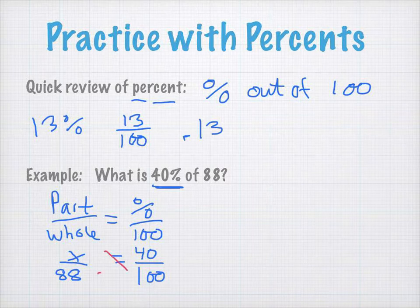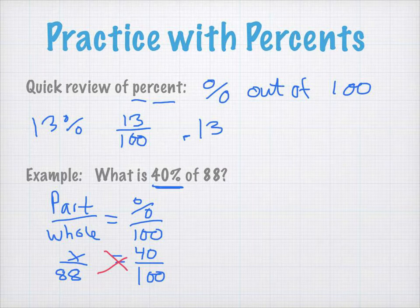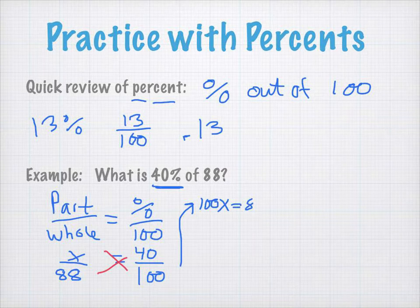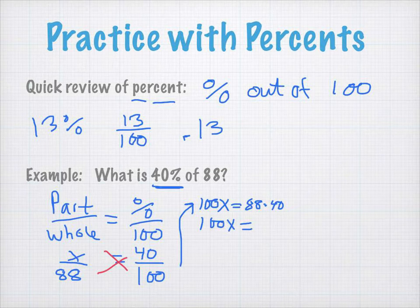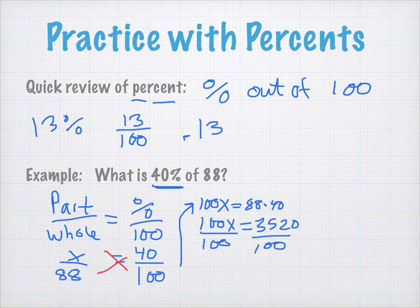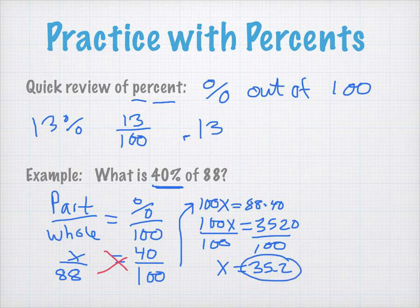So, if I wanted to solve this, I would cross multiply. If you're unsure about that, I would recommend looking up proportions and solving proportions. When we cross multiply, we get 100x. And we get 88 times 40. So, 100x is going to be equal to 3,520. And then, when I divide by 100, I get x equal to 35.2. So, our solution would be 35.2. That's if we want to use a proportion.